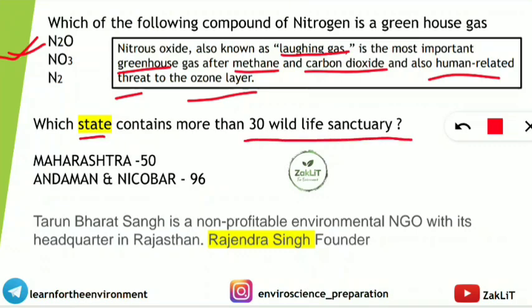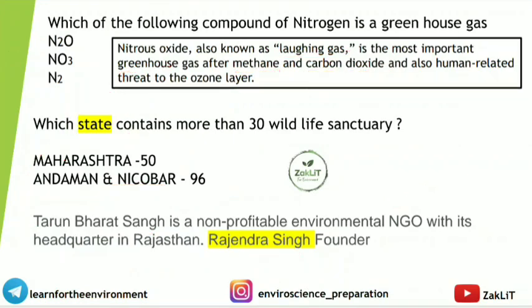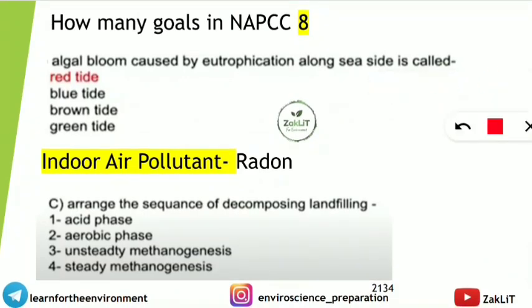The state with more than 30 wildlife sanctuaries: if only states are considered, it is Maharashtra with 50 wildlife sanctuaries. If union territories are included, Andaman and Nicobar has 96. Tarun Bharat Sangh is a non-profit environmental NGO headquartered in Rajasthan, founded by Rajendra Singh. NAPCC has 8 goals — a very frequently asked question. Algal bloom caused by eutrophication along the seaside is called red tide.